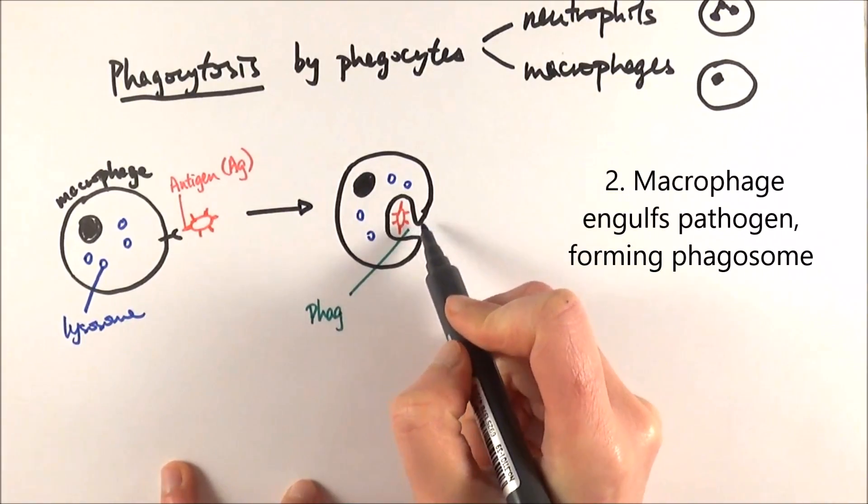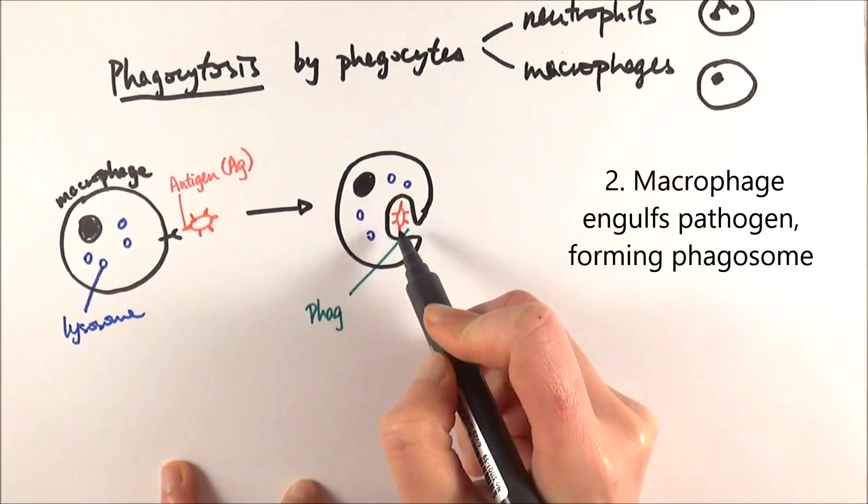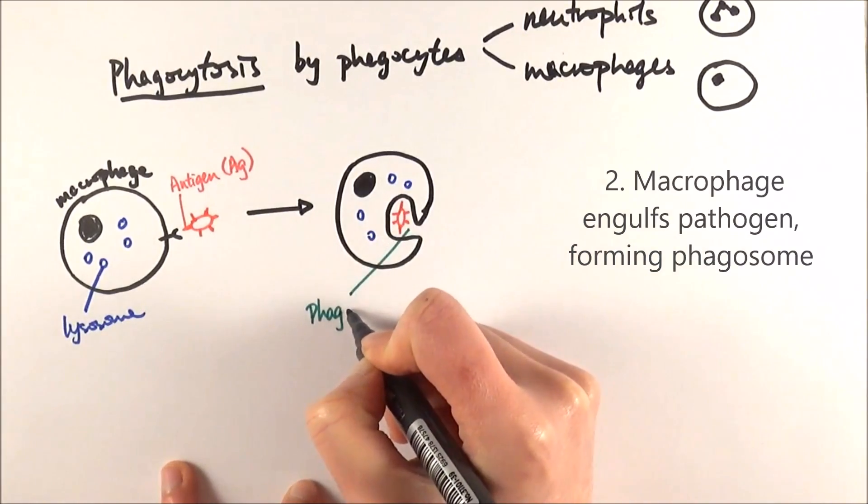So eventually, the cell membrane is going to enclose itself, and we contain the pathogen inside. And we call this the phagosome.